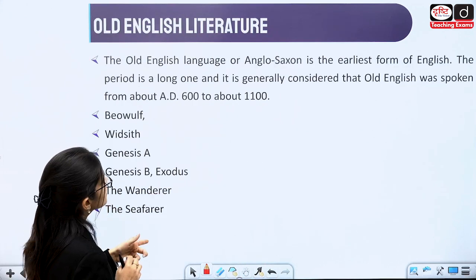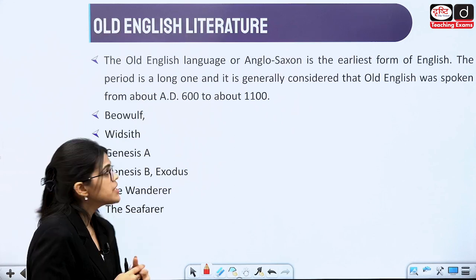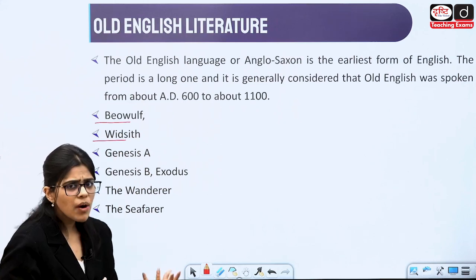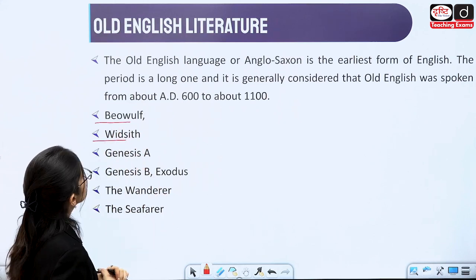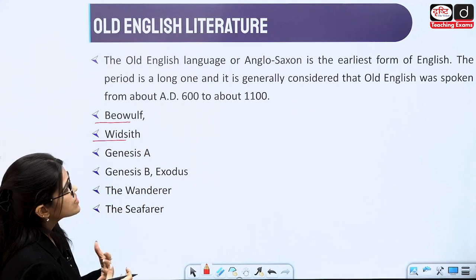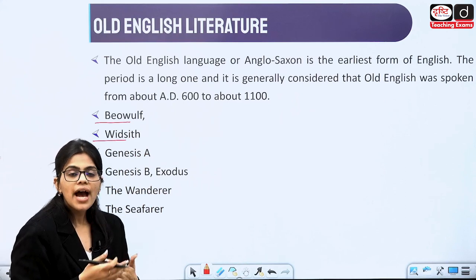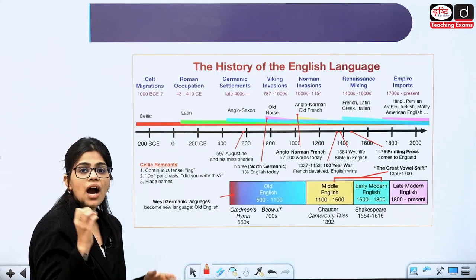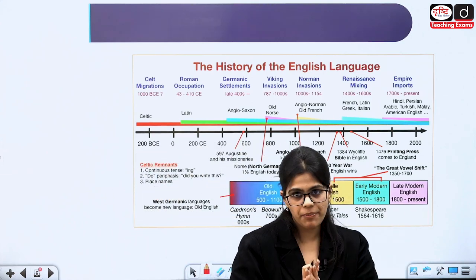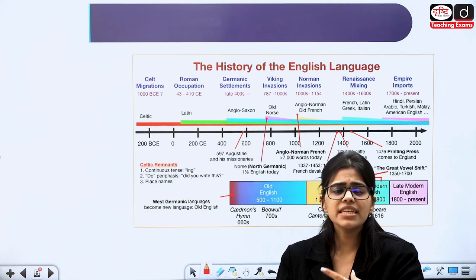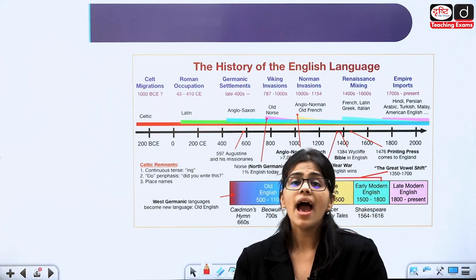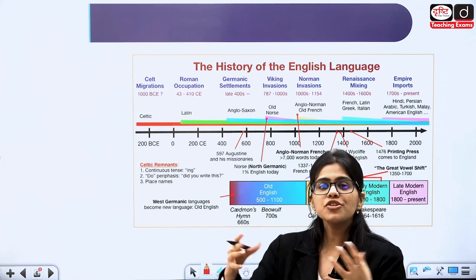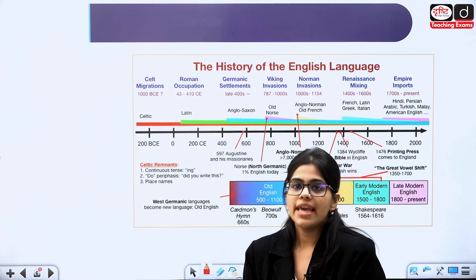We will start with Old English literature. In Old English we will study works like Beowulf, Widsith, and Genesis. The Old English or Anglo-Saxon period is the earliest period of English literature. We will start from the very beginning — how Britain was shaped, how we have the Vikings, who were the Normans, who were the Saxons, how the Angles and Jutes came to that place, and how the whole literature came into picture.